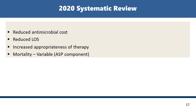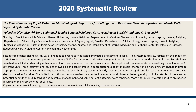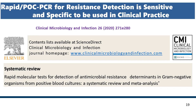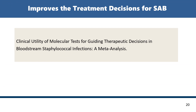A 2018 systematic review highlighted the effect of molecular diagnosis in reducing antimicrobial cost, reducing length of stay, increasing appropriateness of therapy, and reducing mortality. The clinical impact of rapid diagnostic tests for pathogen identification in patients with sepsis showed a significant decrease in antimicrobial cost and significant improvement in the rational use of antimicrobials. Rapid point-of-care tests such as PCR for resistance gene detection are sensitive, specific, and can be used in clinical practice as a method of stewardship.